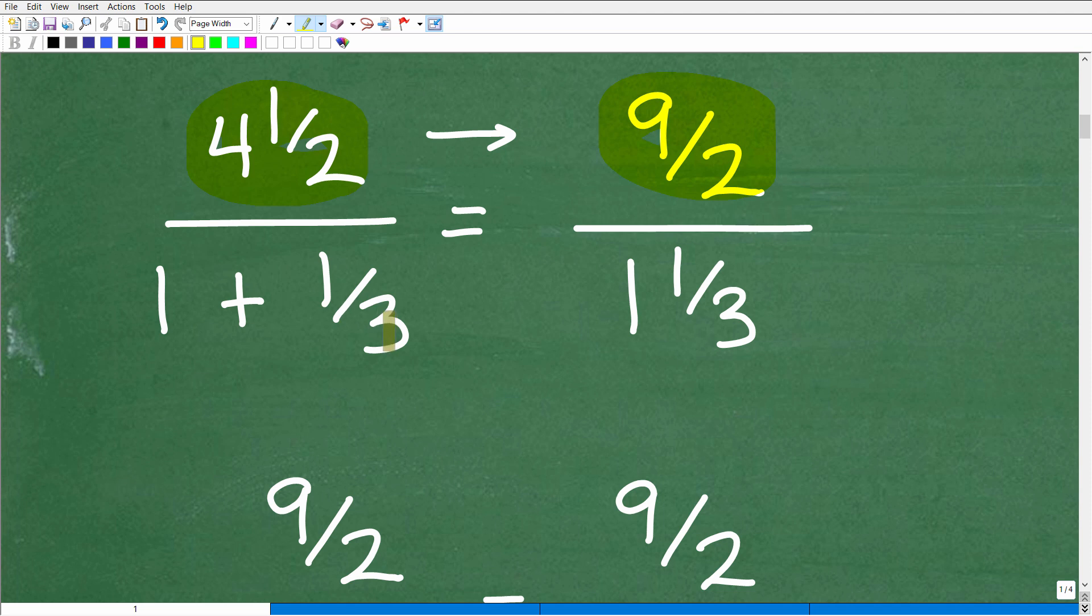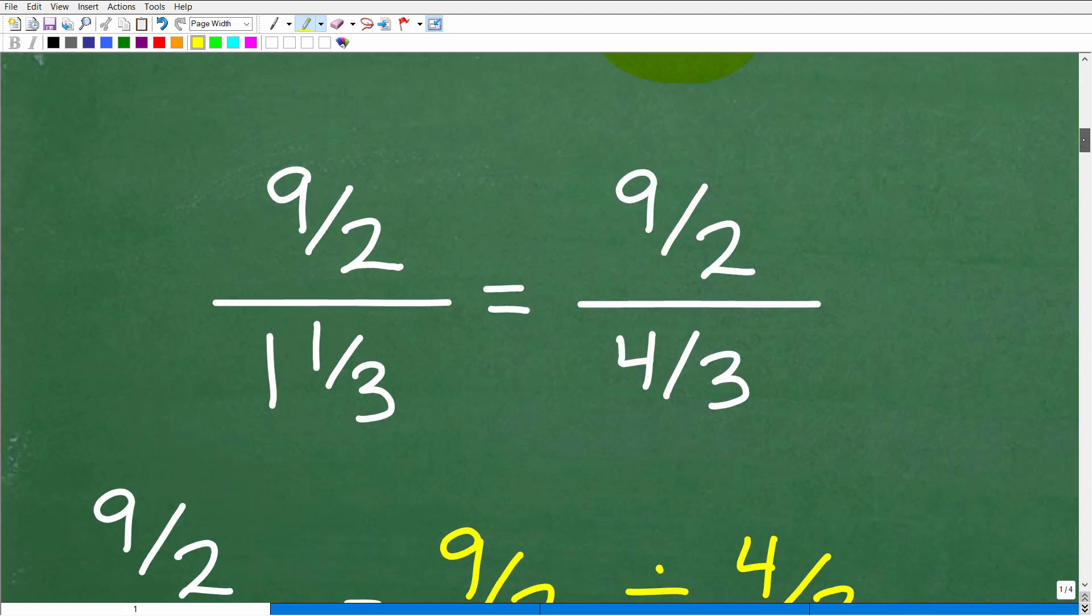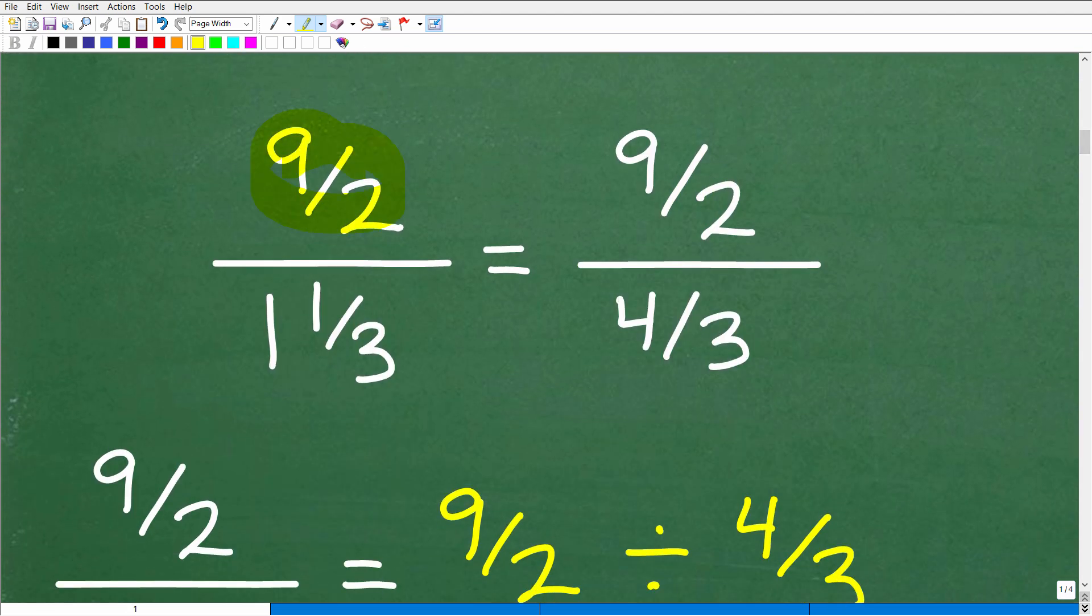And now we have 1 plus 1 third. Well, 1 plus 1 third is the same as the fraction 1 and 1 third. So let's go ahead and write this fraction 1 and 1 third right now as an improper fraction. So here's our 9 halves, that is our numerator, and then 1 and 1 third as an improper fraction. It's going to be 3 times 1 is 3, plus 1, that is going to be 4 thirds.